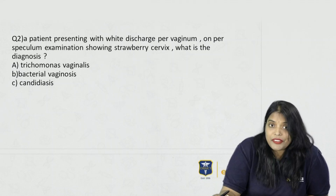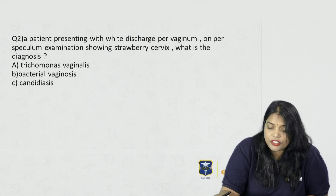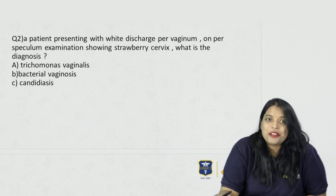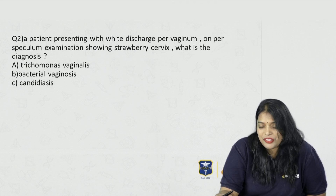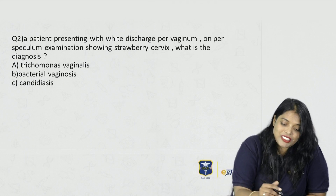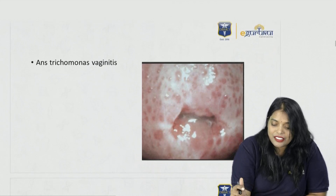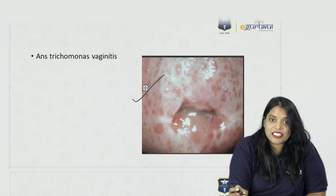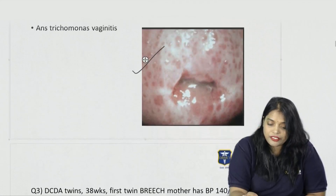A patient presenting with white discharge per vaginum, and on speculum examination showing strawberry cervix — what is the diagnosis? The strawberry cervix itself tells the answer: it is Trichomonas vaginalis. It is a sexually transmitted disease associated classically with strawberry cervix.